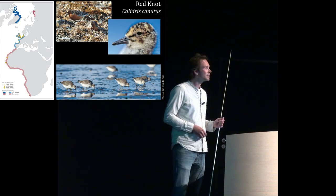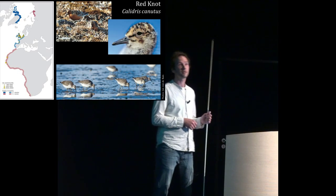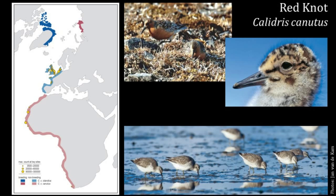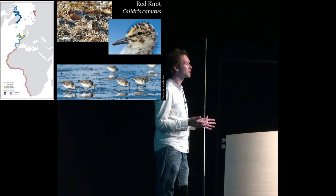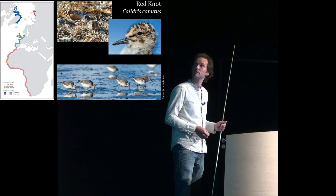The red knot breeds in the Arctic. There are two subspecies: one breeds in Greenland and Canada, and the other subspecies breeds in Siberia — shown here in blue and red. Around July they migrate to the mudflats of the Wadden Sea. The Siberian subspecies migrates onwards to Africa, while the Islandica subspecies that breeds in Canada and Greenland stays here in Western Europe. This is the subspecies I study most particularly.